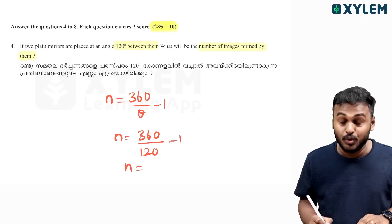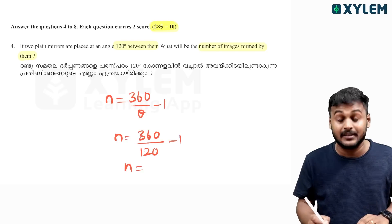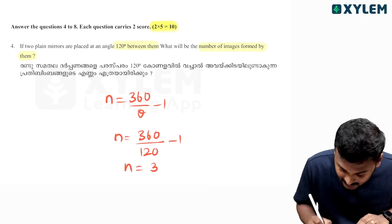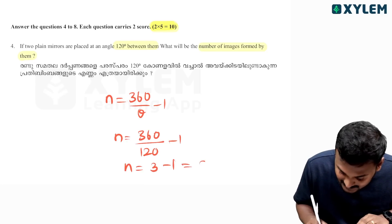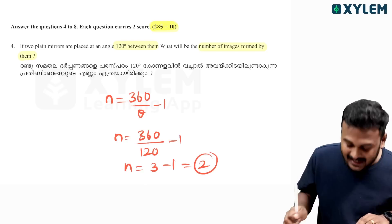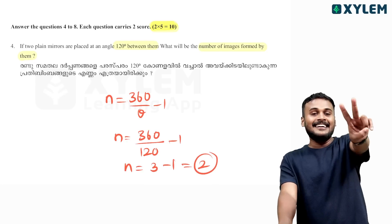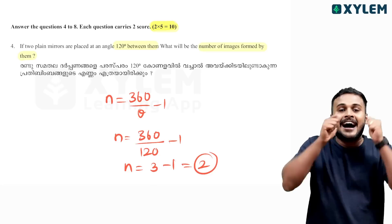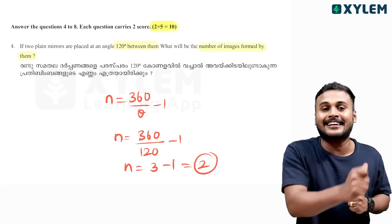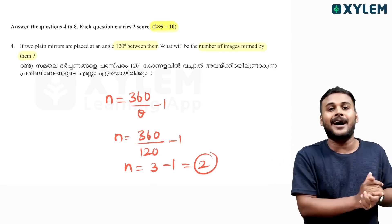N equals 360 divided by theta minus 1. So N equals 360 divided by 120 minus 1, so 3 minus 1 equals 2. We have two images.